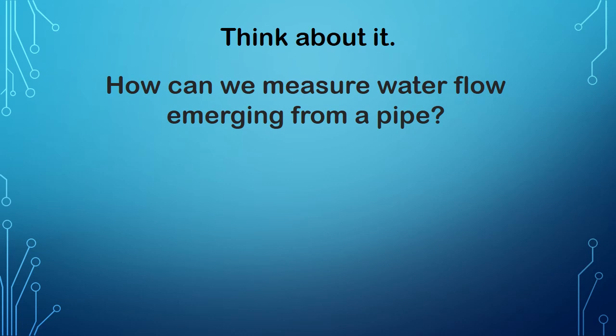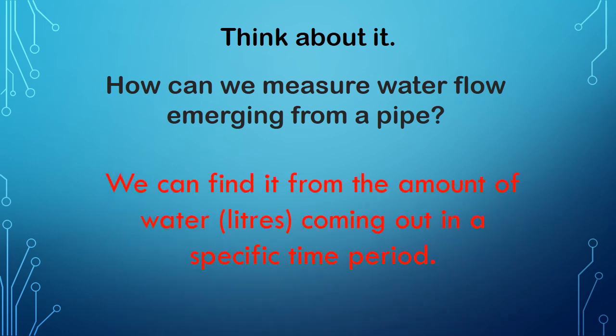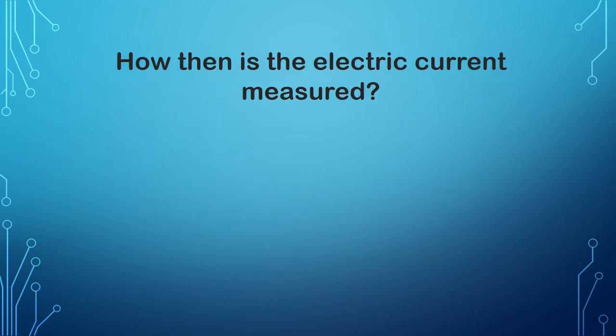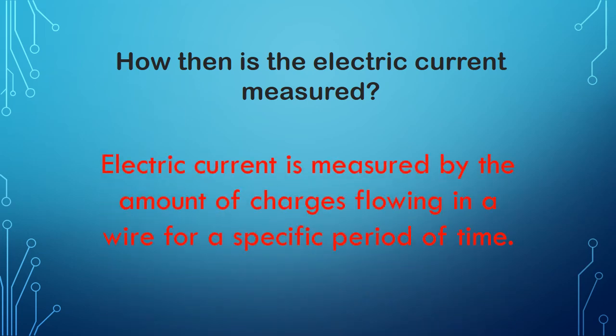Think about it. How can we measure water flow emerging from a pipe? We can find it from the amount of water that is in liters coming out in a specific time period. How then is the electric current measured? Electric current is measured by the amount of charges flowing in a wire for a specific period of time.